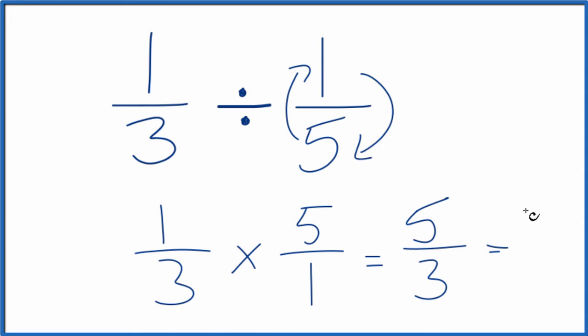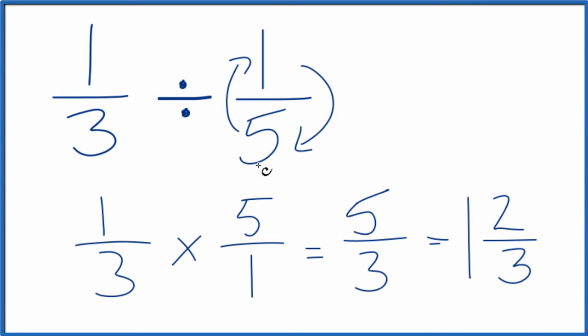3 goes into 5 once, and you have 2 left over, so 2/3. So 1 and 2/3, that's the same thing as 5/3, and that's what you get when you divide 1/3 by 1/5.